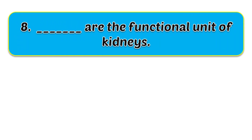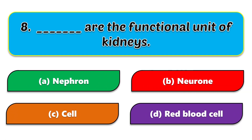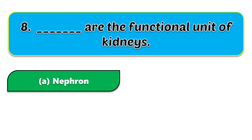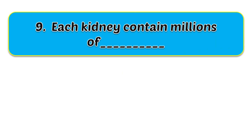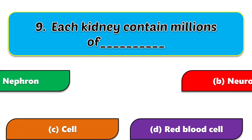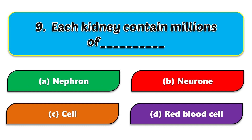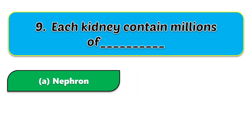Eighth question: blank are the functional units of kidneys. The options are nephron, neuron, cell, and red blood cell. The correct answer is nephron.